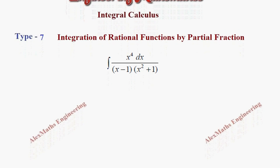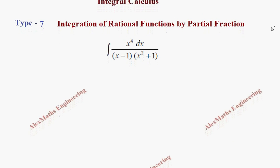The given expression is not a rational function because the degree of the numerator is 4 and the degree of the denominator is 3 after expanding the denominator we get x cubed. So the degree of the numerator is more than the degree of the denominator, so first we have to do long division and convert it into a rational function, then we apply the partial fraction.